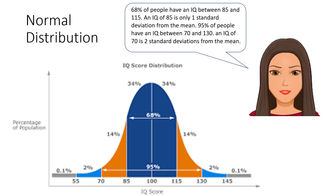Let's look at a normal distribution. IQ is normally distributed in the population — most people have an IQ in the middle. The mean IQ is 100, as is the median and mode. 68% of people have an IQ between 85 and 115; an IQ of 85 is one standard deviation below the mean. 95% of people have an IQ between 70 and 130; an IQ of 70 is two standard deviations from the mean.